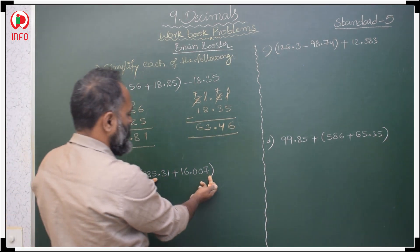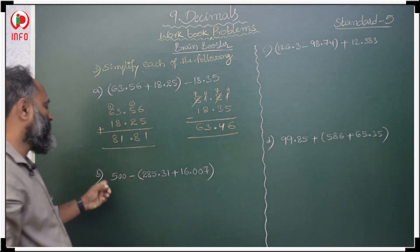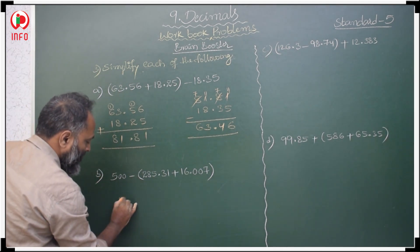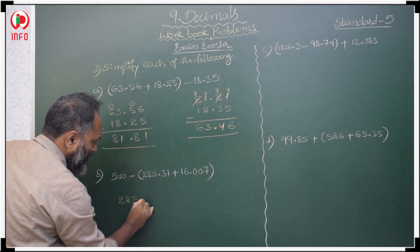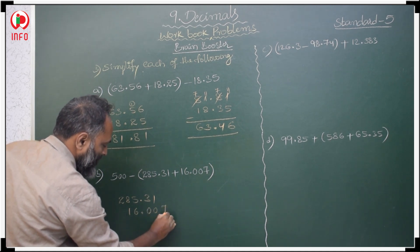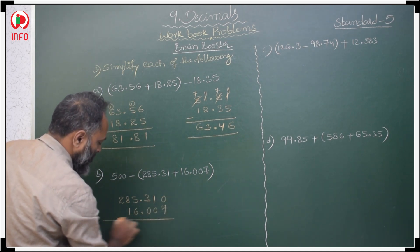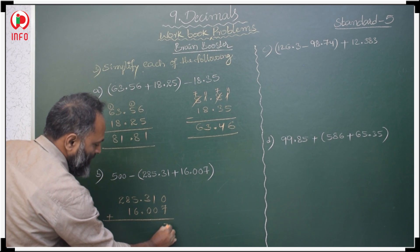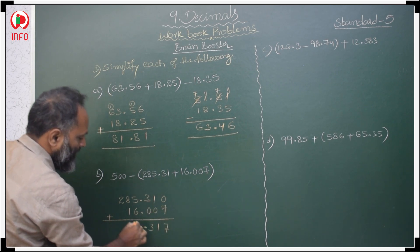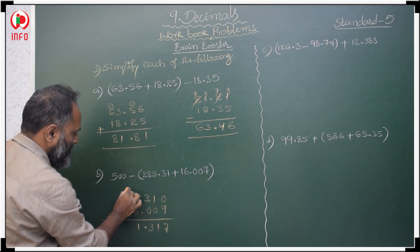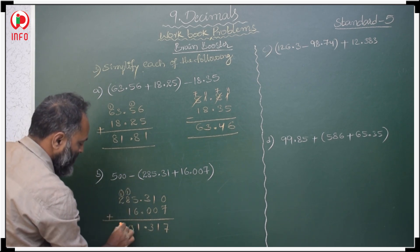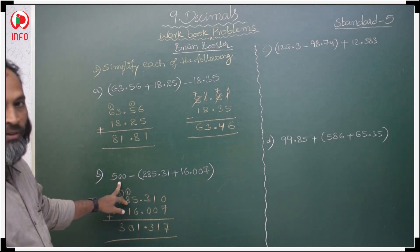Next, first add the two numbers in the bracket: 285.31 plus 16.007. Here we keep zeros to align. 0 plus 7 is 7; 1 plus 0 is 1; 3 plus 0 is 3 point; 6 plus 5 is 11; 8 plus 1 is 9; carry makes 10; 2 plus 1 is 3. Sum is 301.317. This sum should be subtracted from 500.